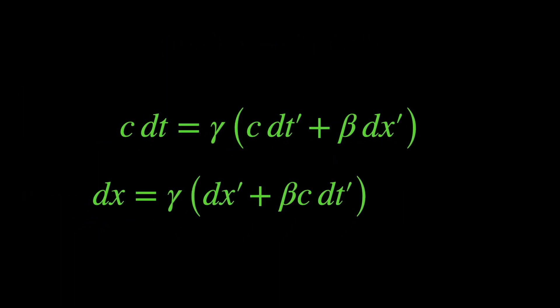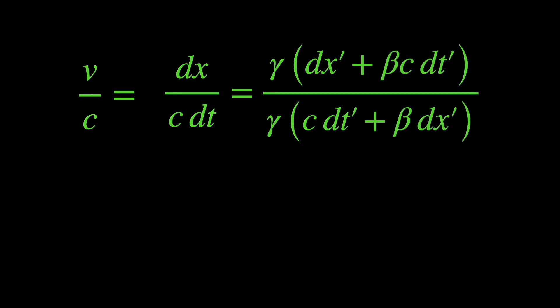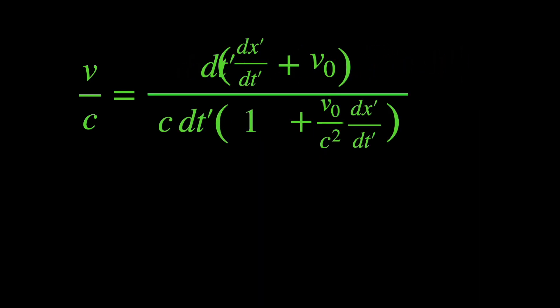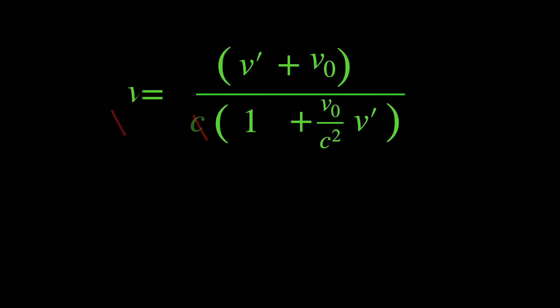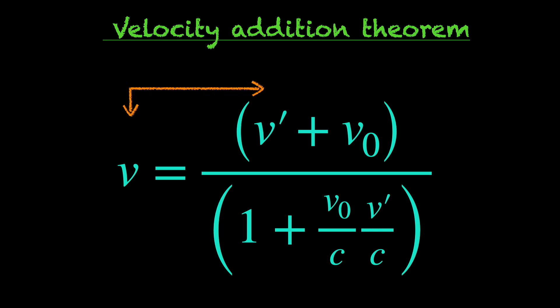Now velocity or speed is just the time rate of change of position, right? So taking the ratio of changes in position dx and change in time c dt, we get the velocity in units of light speed, that is V by C in S frame. On the right-hand side of the equation, we have to endure a little algebra, eighth standard tops, to express things in terms of V' the velocity in S' frame and V0 the relative velocity between S and S'. This is the relativistic version of the velocity addition theorem, telling us how V and V' relate according to the Lorentz transformation equations, which in turn are consequences of the postulates of relativity.